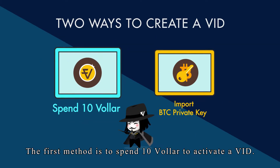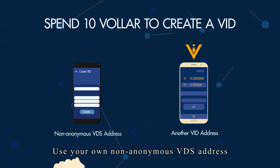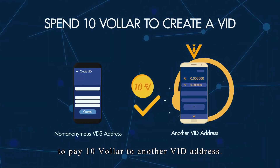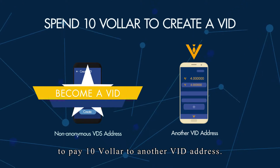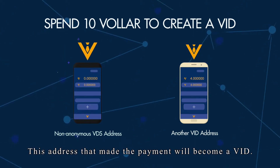The first method is to spend 10 baler to activate the VID. Use your own non-anonymous VDS address to pay 10 baler to another VID address. The address that made the payment will become a VID.